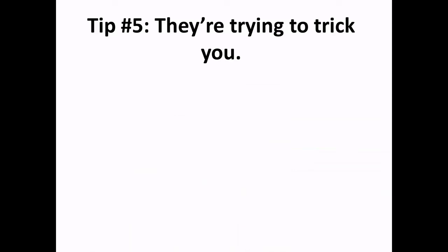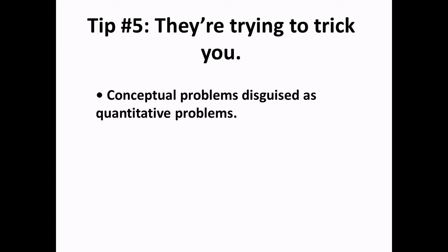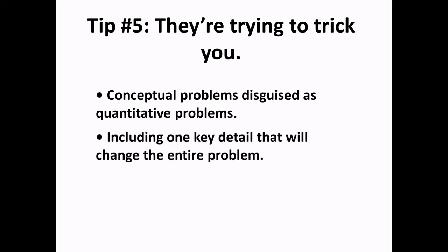Tip number five: they're trying to trick you. The insidious NCEES test writers will lull you into a false sense of security by finding common mistakes and including those mistakes as options on the test. So you'll have one right answer and three traps, and they come in many forms. One common form is something we touched on already, and that's conceptual problems disguised as quantitative problems. These problems will give you tons of data, but if you understand the concept you'll see the correct answer right away. No number crunching necessary.